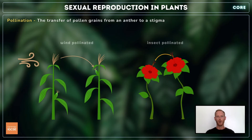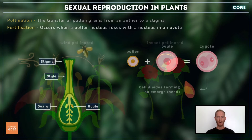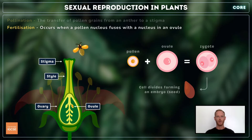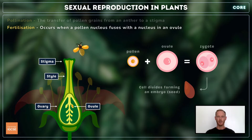Pollination is the transfer of pollen grains from an anther to a stigma. Some flowers rely on insects to transfer their pollen, while others use the wind. When pollen lands on a stigma, the male reproductive material travels down the style and into the ovary, where it fertilises an ovule. Fertilisation can be defined as the fusion of a pollen nucleus with a nucleus of an ovule. This results in the mixing of genetic information, and the formation of a zygote, which divides and eventually becomes a seed.